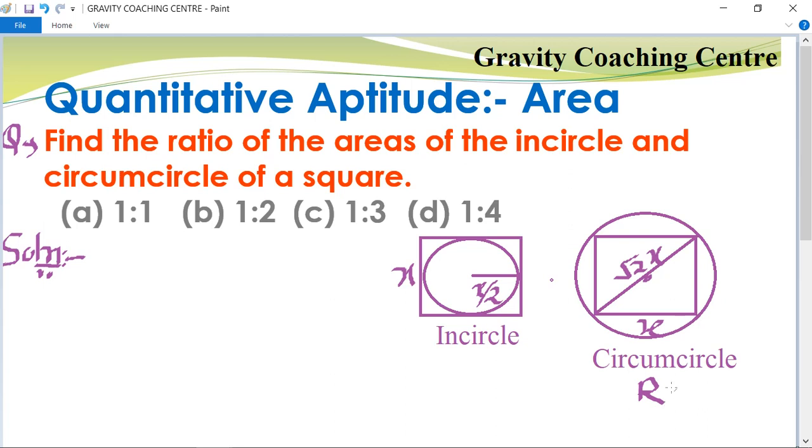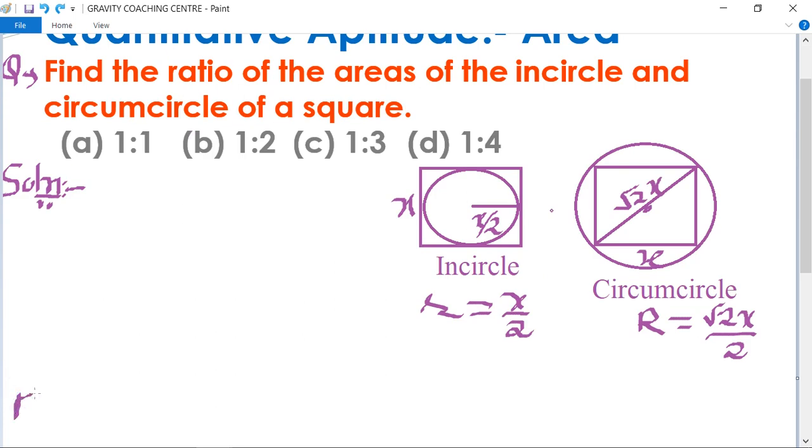The radius of circumcircle is root 2x upon 2, and the incircle radius is x upon 2. So the ratio equals...